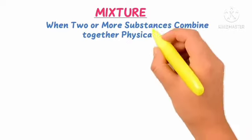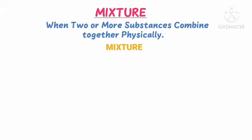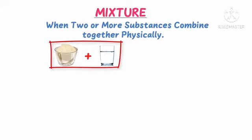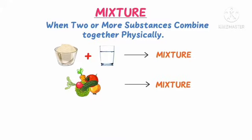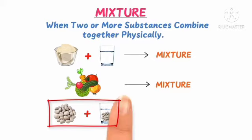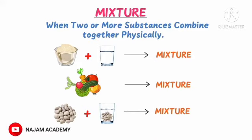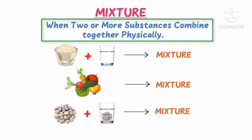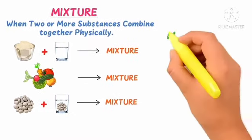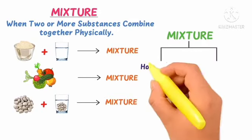If two or more substances are mixed together in any proportion and do not undergo any chemical change but retain their characteristics, the resulting mass is called a mixture. When two or more substances are combined together physically, that is called a mixture. Examples: salt and water, vegetables and fruits, grains and water — these are all mixtures, physically combined together.